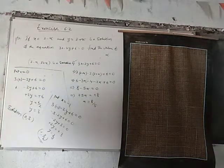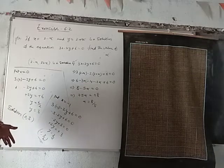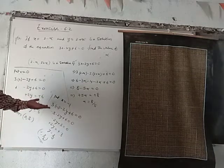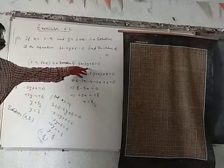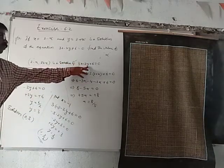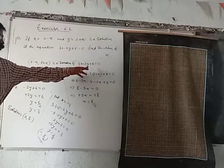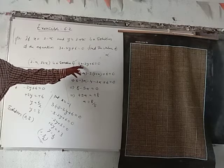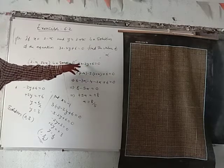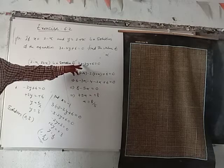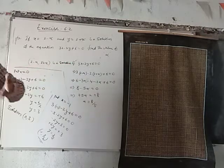Two solutions found so far. For the third solution, put y = 0 or y = -1, or x = 2 — whatever value you like — to get the third point on the line.